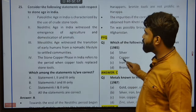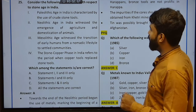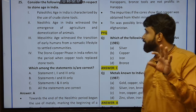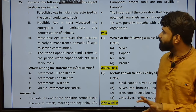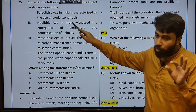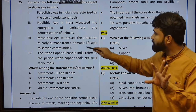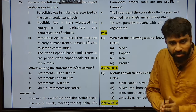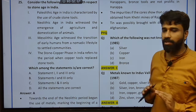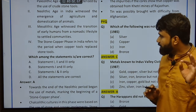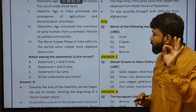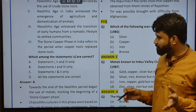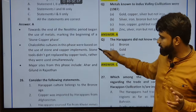Consider the following statements with respect to the Stone Age in India. Paleolithic age in India is characterized by the use of crude stone tools. Neolithic age in India witnessed the emergence of agriculture and domestication of animals. Mesolithic witnessed the transition of early humans from a nomadic lifestyle to settled community — that is a transition in the Mesolithic time. Stone copper phase in India refers to the period when copper tools replaced stone tools — only the first three statements are correct; the fourth is wrong.